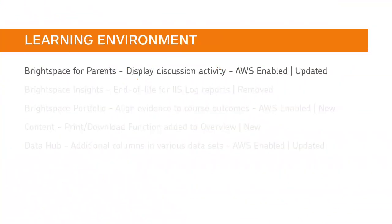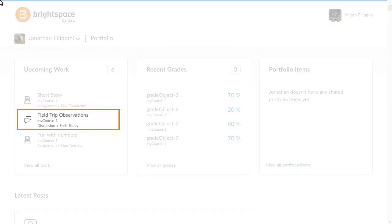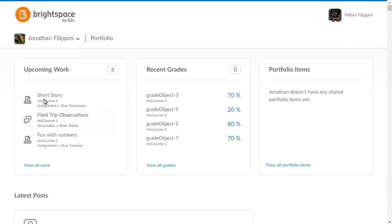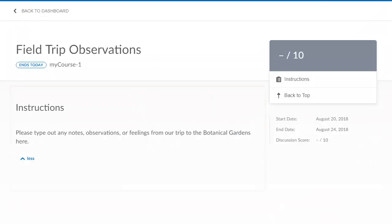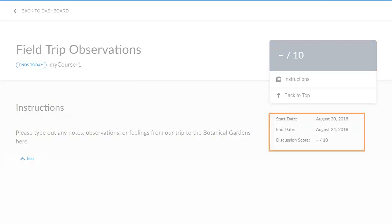Parents can now see discussion details, such as discussion name and instructions. If an end date or grade item is assigned to a discussion, it will display in the Upcoming Work and Recent Grades widgets, respectively. When viewing the Upcoming Work widget, parents can now click a discussion topic to view instructions, grades if applicable, and availability.